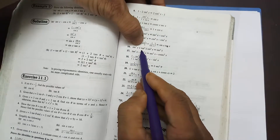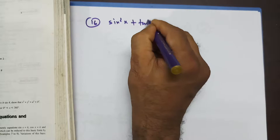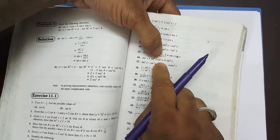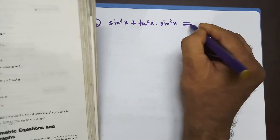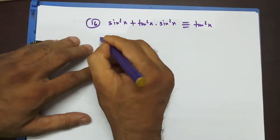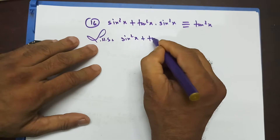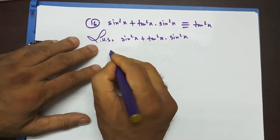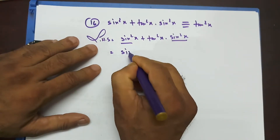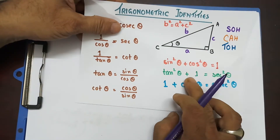We're coming to question number 16, which says: sin²x plus tan²x, times sin²x, is identical to tan²x. Starting from the left hand side: sin²x plus tan²x times sin²x. I can take sin²x as a common factor, leaving (1 + tan²x). I have the identity tan²θ + 1 = sec²θ, so this becomes sin²x times sec²x.